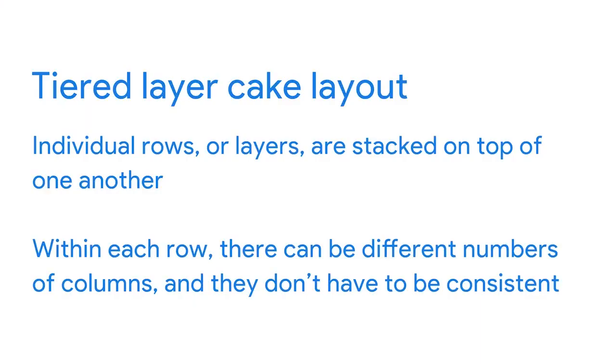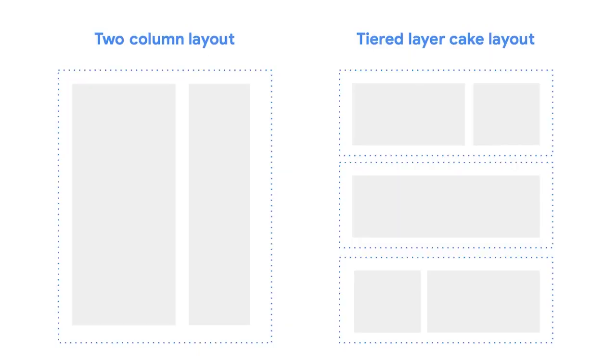And let's check out a tiered layer cake layout. It looks like a layered cake with individual rows stacked on top of one another. Within each row there can be different numbers of columns and they don't have to be consistent. The tiered layer cake layout is often used in responsive website design, as layers can easily be swapped out or moved. It differs from a regular multi-column layout in that there is no all-encompassing container or long-running sidebars.